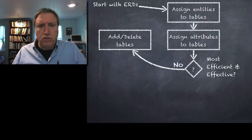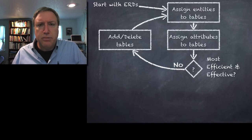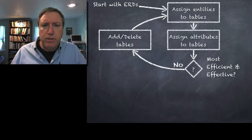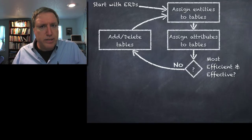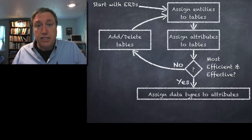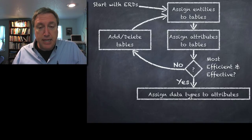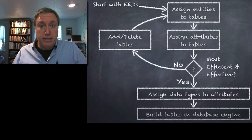This is a process called normalization, which we'll cover in the future. Finally, we go back, we repeat, we check: are the entities distributed to the right tables? Are the attributes in the right tables? And we evaluate again against a set of quality criteria — do we have the most efficient, most effective database? Eventually the answer is yes. It's good enough for this iteration. At that point we start talking about how do we implement this design in a particular database engine — we assign data types to the attributes and then we build the table using the database engine we've chosen.